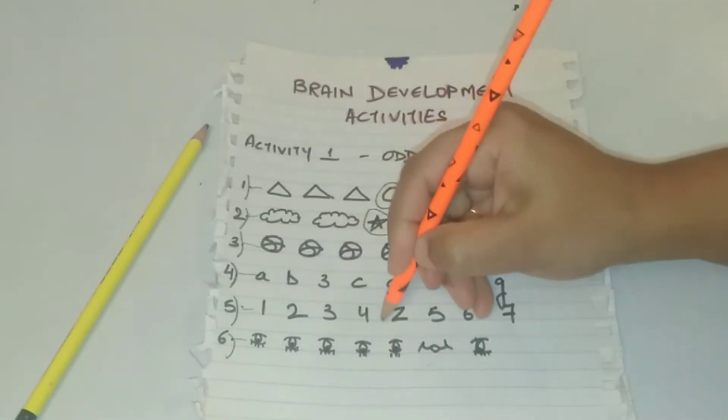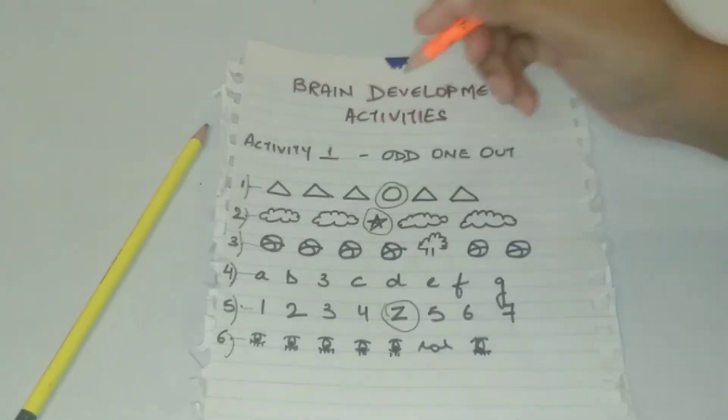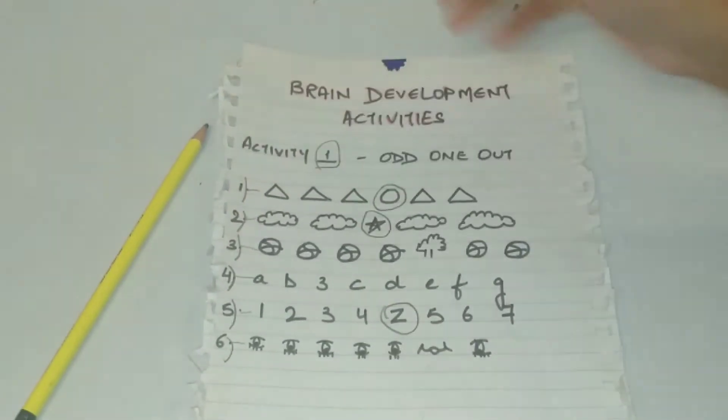Like in this, it's a number sequence 1, 2, 3, 4 and Z is written. So the Z is the odd one out.